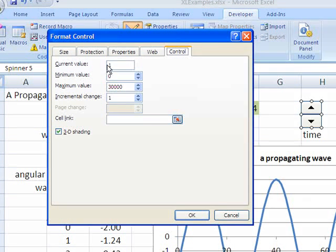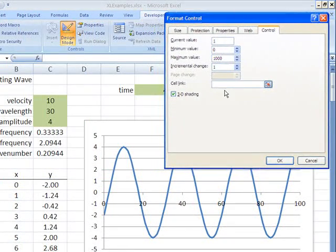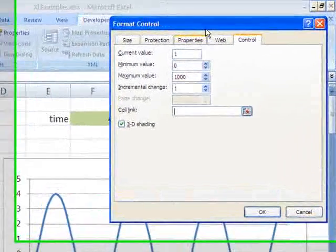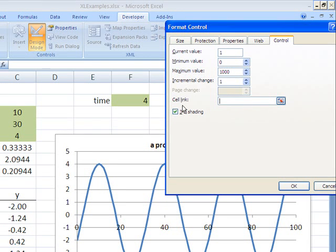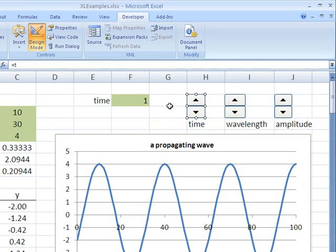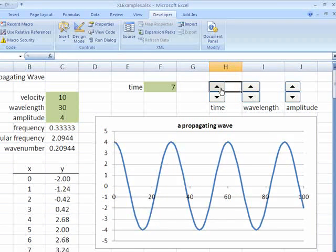The time control, I'm going to make a minimum value of zero and a maximum value of a thousand. Incremental change whenever you hit the button it's either going to increase or decrease by one. And here's the critical part: Cell link. And here I'm going to put in a reference to what cell I want this control to change. And I can either put in F2 or since I've named that cell T, I can just type in the name T. So now when I come out of design mode and I hit that button, I'm changing the value of T or cell F2.